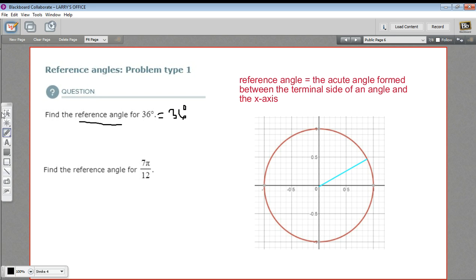How about 7 pi over 12? Now we're in radians, so we need to think about the radians on the unit circle. I'm going to put in a couple of values here for reference. So we've got zero, we've got pi over 2, and we've got pi. So we're looking for the reference angle for 7 pi over 12. So let's draw this angle in first. Where is 7 pi over 12?